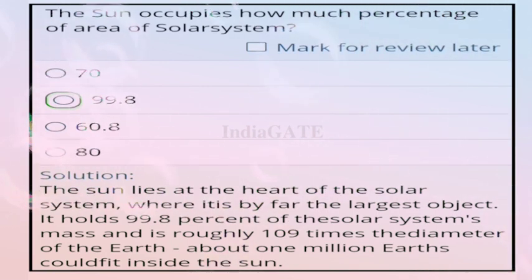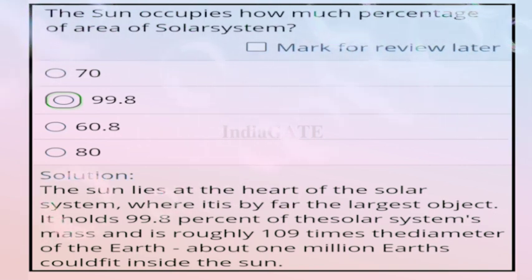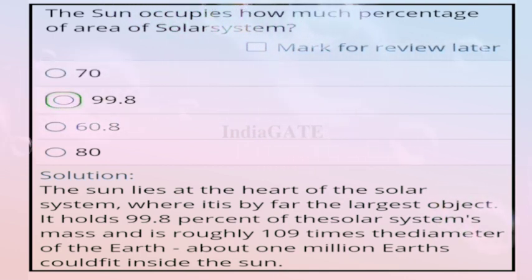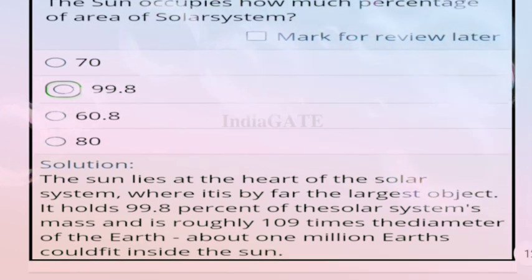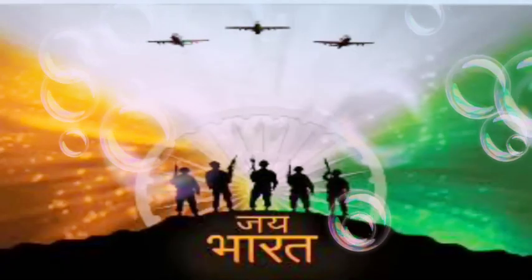Question 100: the sun occupies what percentage of the area of the solar system? Correct answer is 99.8%. The sun lies at the heart of the solar system and is by far the largest object, holding 99.8% of the solar system's mass, with a diameter roughly 109 times that of Earth. This is the last question of the session. Thank you for watching. Jai Hind, Jai Bharat.